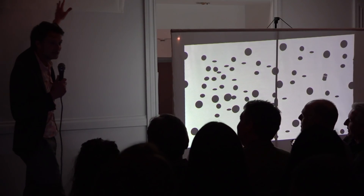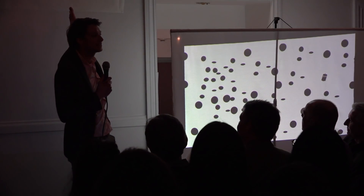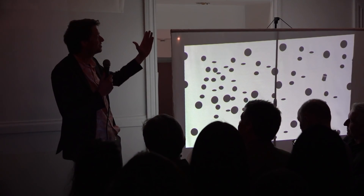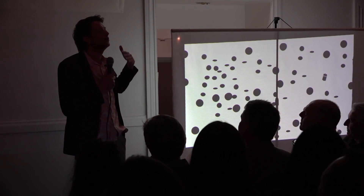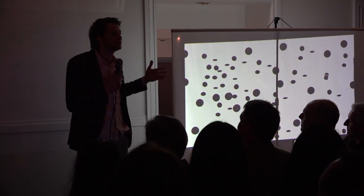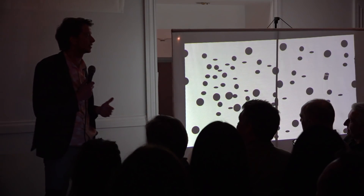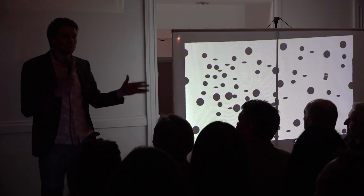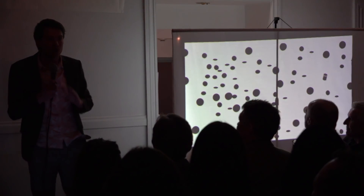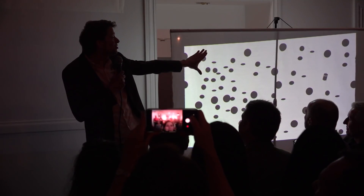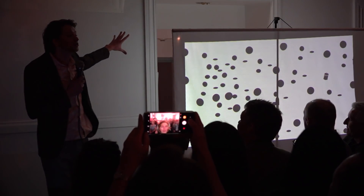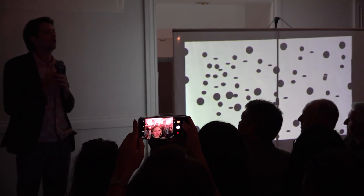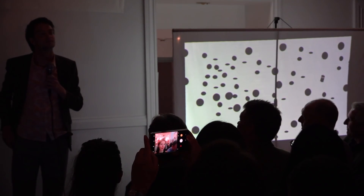In space, we've got these three-dimensional objects, and once they hit this screen — our night sky — we observe them as two-dimensional objects. So what we're going to take you through tonight is how we can go from these two-dimensional shapes to actual three-dimensional galaxies.